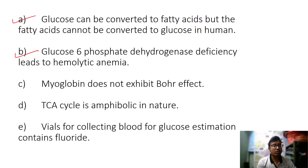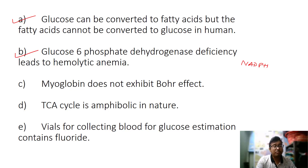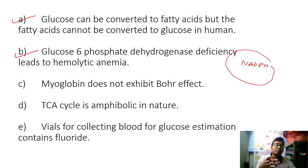Now the second question: G6PD deficiency leads to hemolytic anemia. G6PD — glucose-6-phosphate dehydrogenase — is an enzyme of the pentose phosphate pathway (HMP shunt). It converts glucose-6-phosphate to 6-phosphogluconolactone; this is the first rate-limiting reaction of HMP shunt. In this reaction, NADPH is produced via the G6PD reaction.